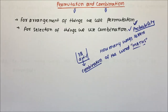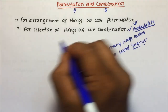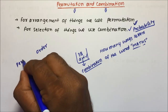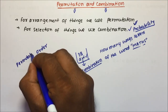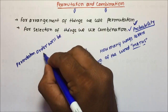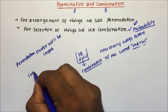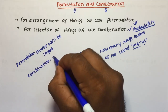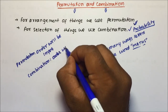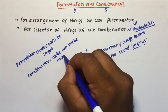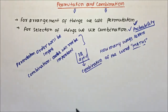Friends, these two terms you have to understand. There is one more difference between permutation and combination: in permutation, order will be important, whereas in combination, order will not be important. So these are two key differences between permutation and combination which you have to keep in mind.